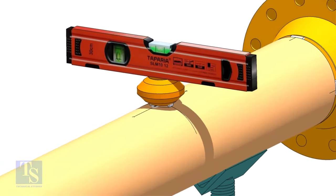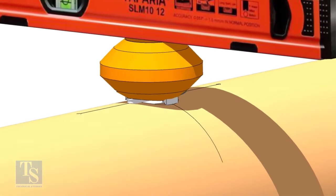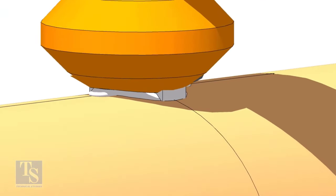Tack weld on the sides of the olet. Remove the gap rod and check the level again.